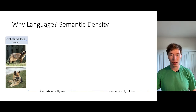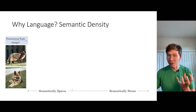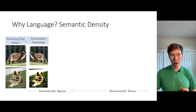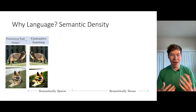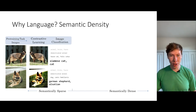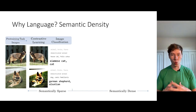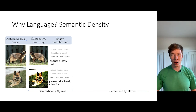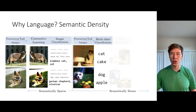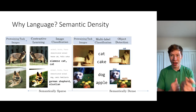You might ask: why should we use language to learn visual representations? One good reason is semantic density. A piece of language captures much more semantic information than the learning signals used in other approaches. Self-supervised learning often relies on contrastive approaches that just try to match representations across different random augmentations of an image — no notion of semantics or categories. In image classification like ImageNet pre-training, there's one associated category label to each image, giving only a little bit of semantic information per training image.